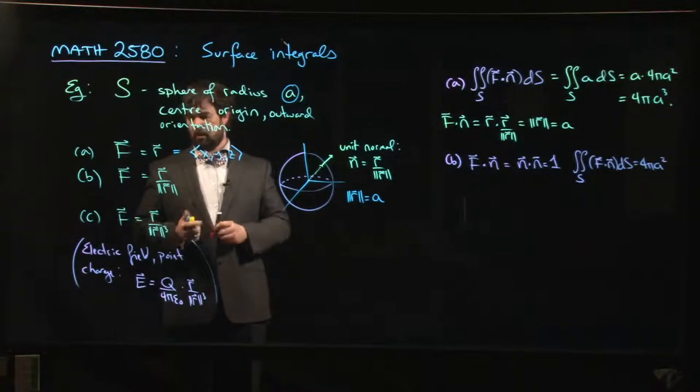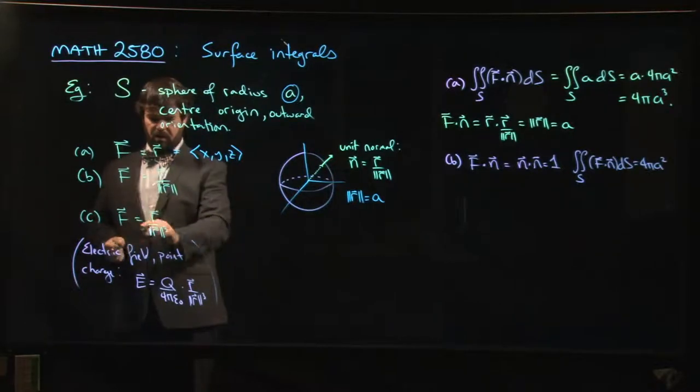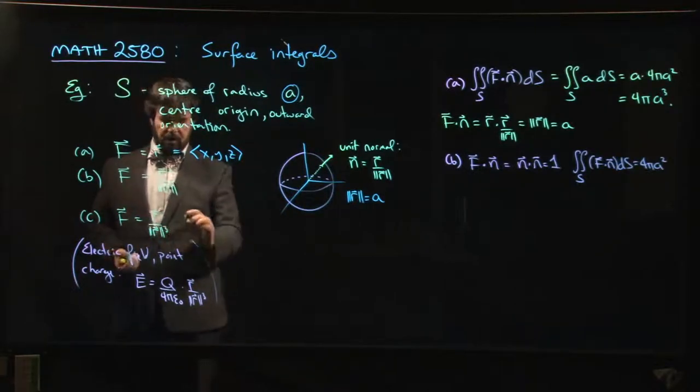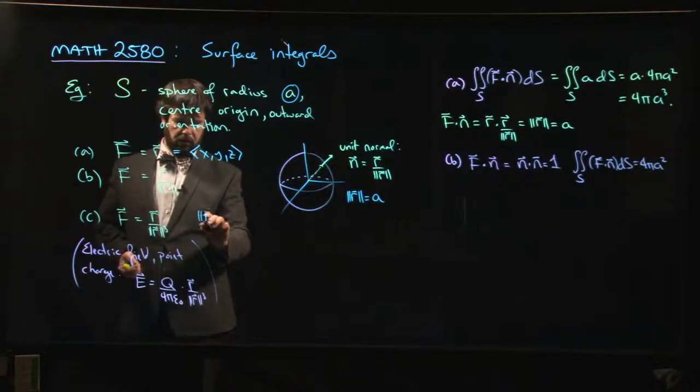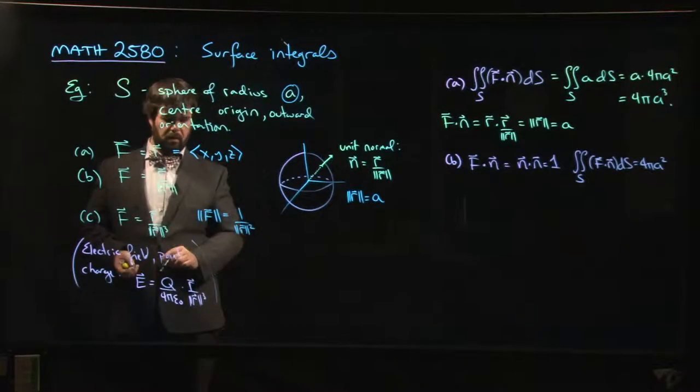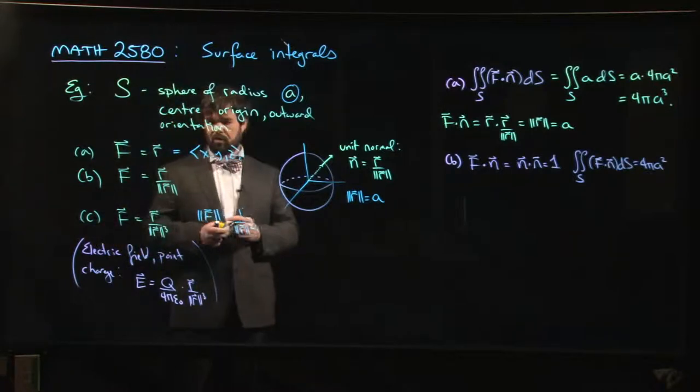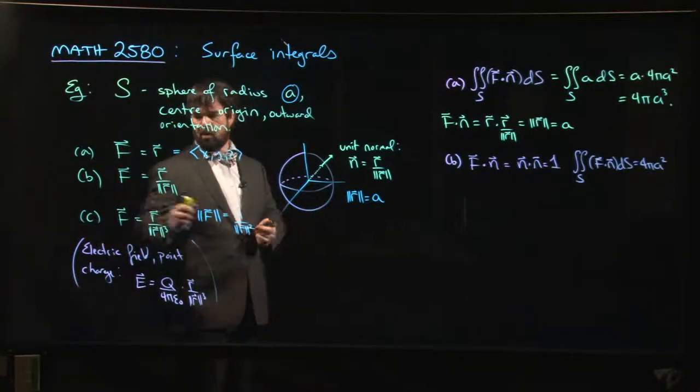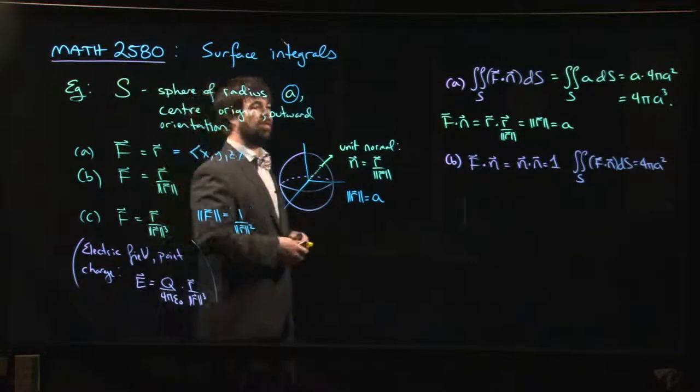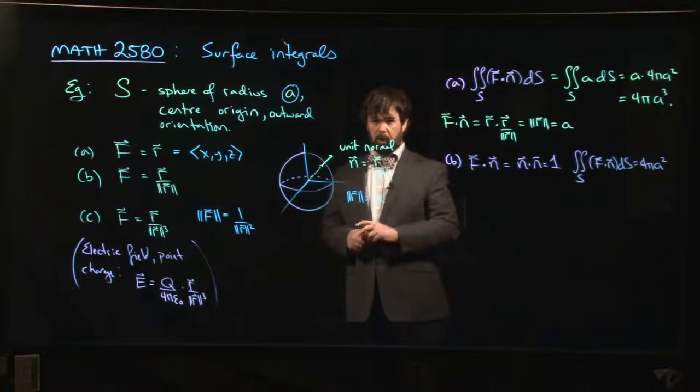Last one. The reason I put this in is that this is a very important type of vector field in physics. When you compute the magnitude, it's 1 over the magnitude of r squared. You get the magnitude of r over the magnitude of r cubed. This is the type of vector field for all these forces in physics that follow inverse square laws.